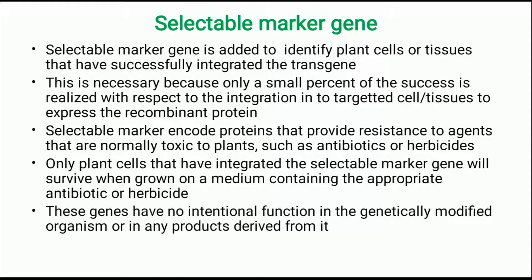Now we will see about selectable markers. A selectable marker is added in the transgene construct to identify plant cells or tissues that have successfully integrated the gene into the host chromosome. This is necessary because only a small percentage of cells achieve successful integration. Selectable markers encode proteins that provide resistance to antibiotics or herbicides in plants. The plant cells that have integrated the selectable marker gene will survive when grown in medium containing specific antibiotics or herbicides that are otherwise toxic to plants. These genes have no internal functions in the genetically modified organisms.